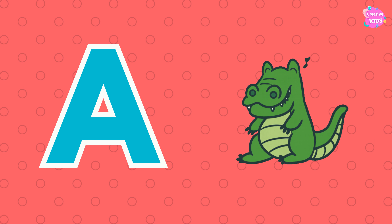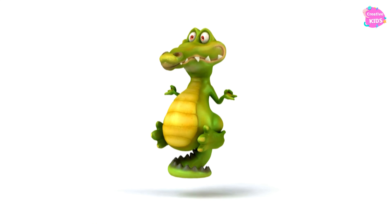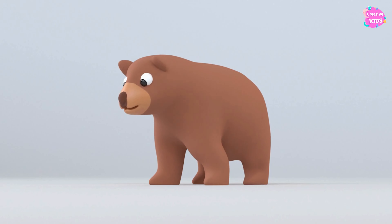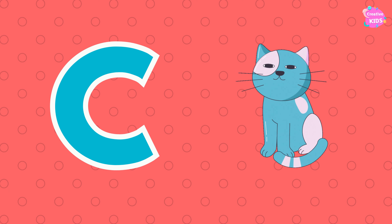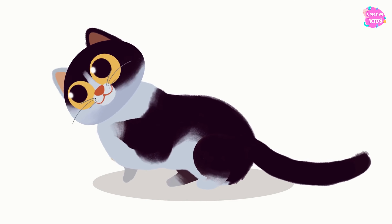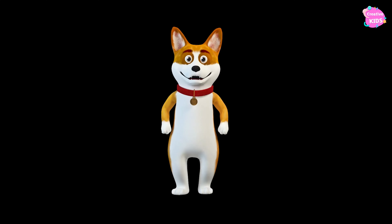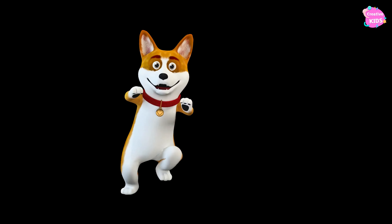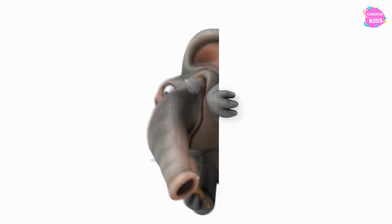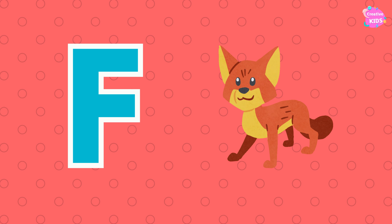A is for alligator. A-alligator, A-alligator. A is for alligator. B is for bear. B-b-bear, B-b-bear. B is for bear. C is for cat. C-c-cat, C-c-cat. C is for cat. D is for dog. D-d-dog, D-d-dog. D is for dog. E is for elephant. E-l-elephant, E-l-elephant. E is for elephant. F is for fox.